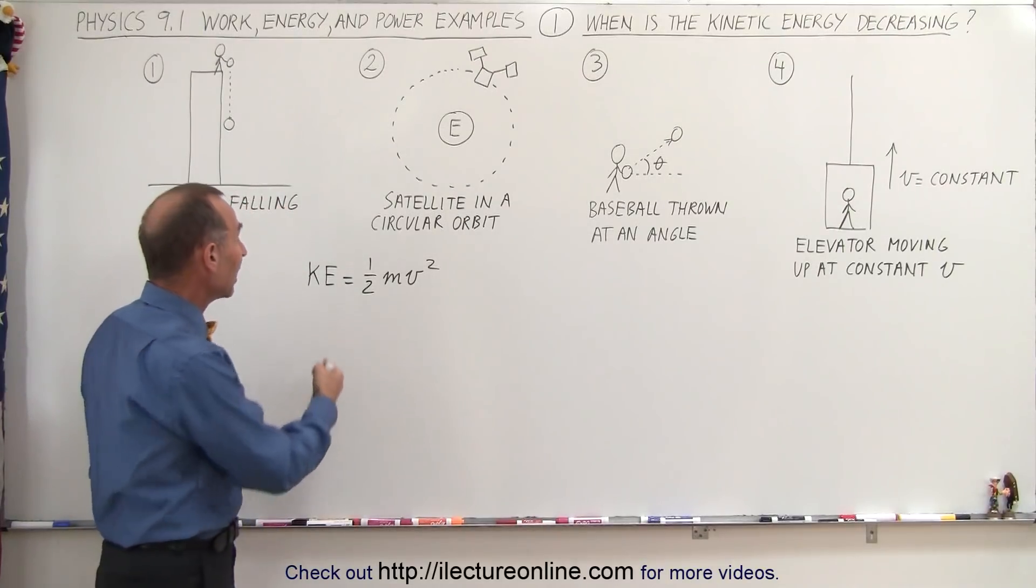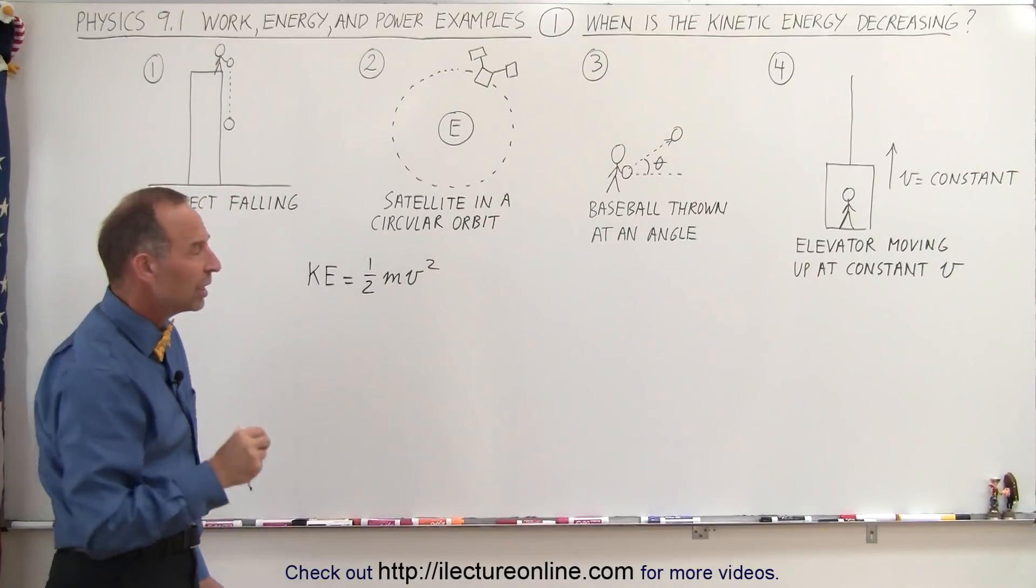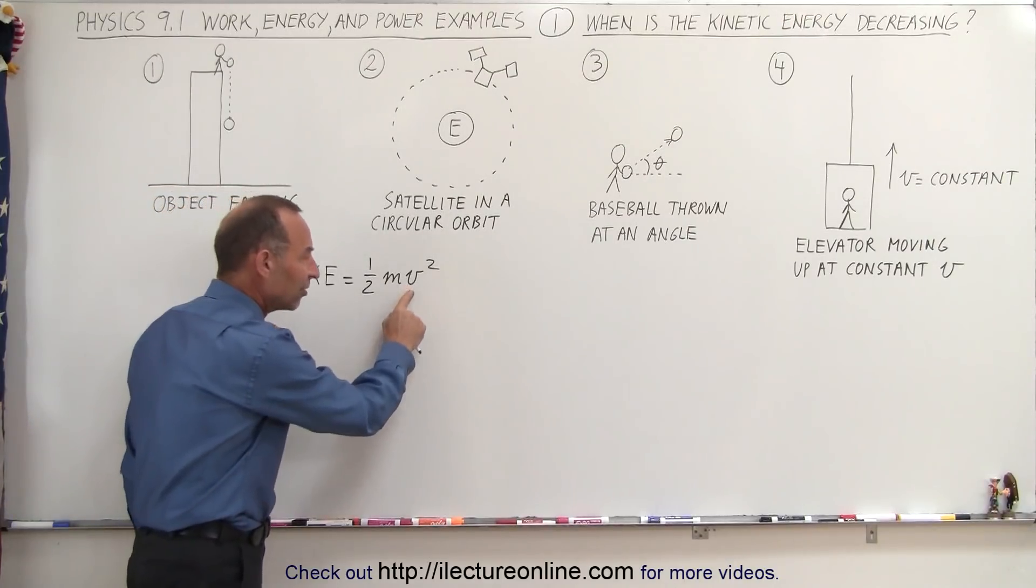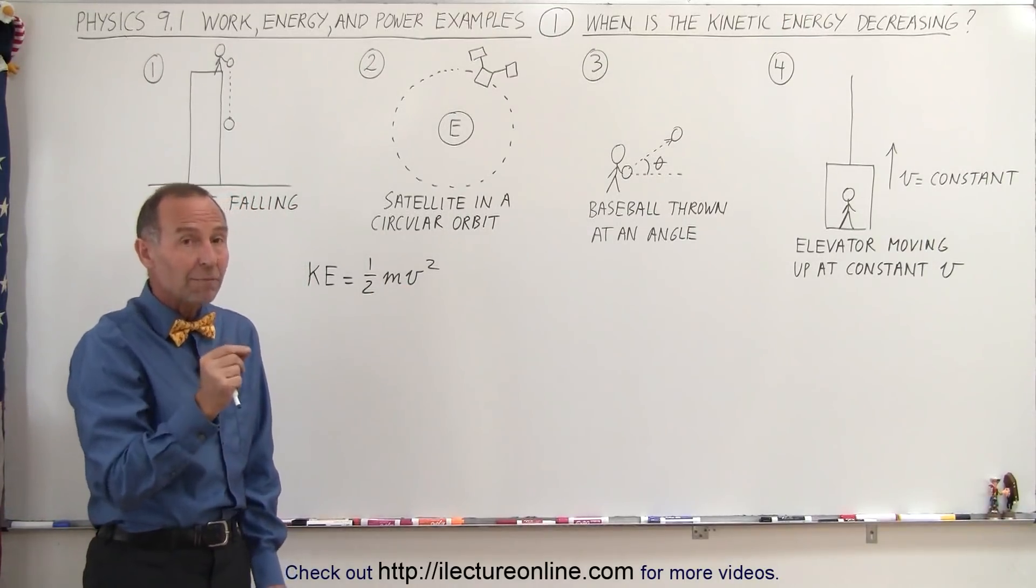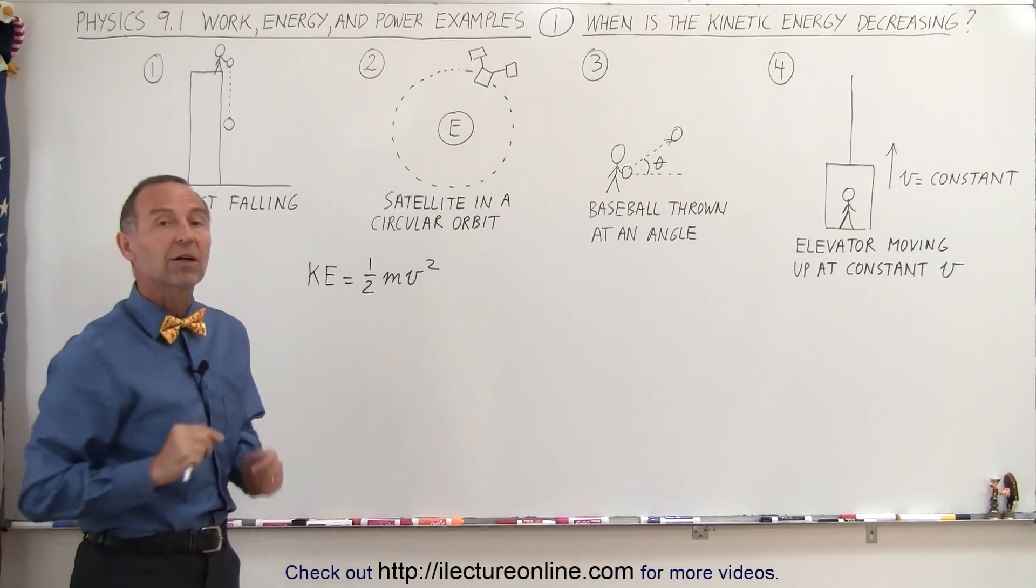If the velocity increases, kinetic energy will increase. If the velocity decreases, the kinetic energy will decrease. But since the velocity is squared, it doesn't matter if the velocity is positive or negative. So it's really the absolute value of the velocity.